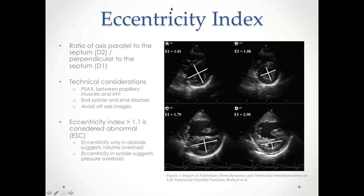Here is a picture of a normal example on top — this is from a pediatric patient so the cavity size looks small, but the concept is the same. On the bottom is a patient with pulmonary hypertension who has a clearly elevated eccentricity index: at end diastole it is 1.79, and at end systole it is approximately 3. Measurements should be done between the level of the papillary muscles and the mitral valve, in both diastole and systole, and off-axis images should be avoided.